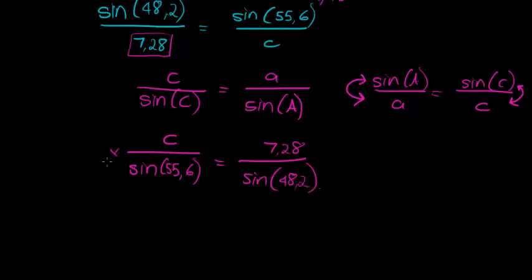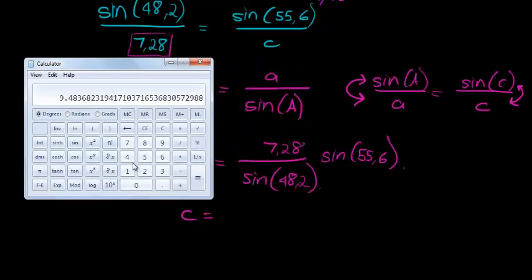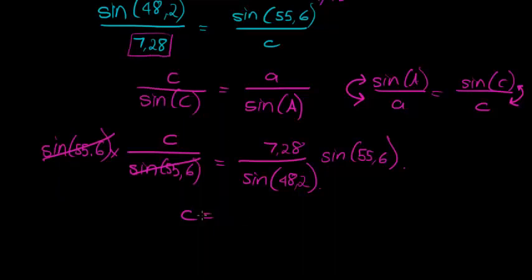And now to get C on its own, we only need to multiply with sine 55.6 on both sides. This side cancels, so I immediately have my expression for C. 7.28 times sine of 55.6, there's my sine of that, divided by sine of 48.2. And there we go, equals to 8.06, rounded, approximately equal to 8.06.